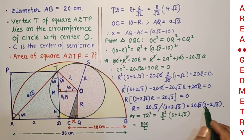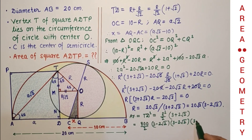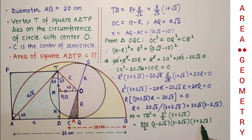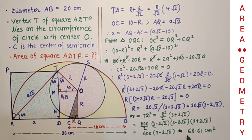Continuing the area calculation: (3 − 2√2)·(3 + 2√2) equals 1, so those terms cancel. The area finally equals 400(3 − 2√2), which is approximately 68.63 centimeters squared. That is the answer.